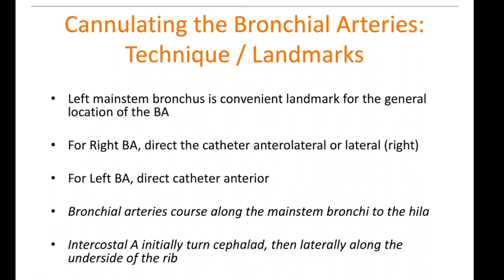For the left bronchial artery, the vessel usually comes off directly anterior. Once you have your images, make sure the arteries you think are bronchial arteries course along the main stem bronchi. The intercostals initially turn cephalad and then laterally along the underside of the rib.